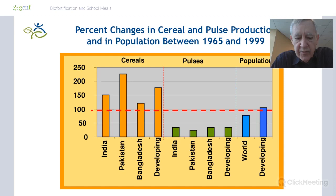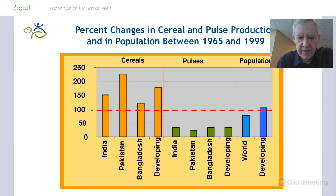What I want to bring your attention to are the green bars — that's pulse production. That's a marker for vegetables, fruits, animal and fish products, all the non-staple foods that are supposed to provide dietary quality. Those didn't see the same productivity increases. Pulse production increased by about 25%, but it didn't keep pace with population growth.